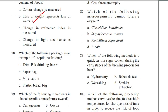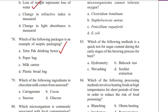Question 78. Which of the following packages is an example of active packaging? A. Tetra pack drinking boxes, B. Paper bag, C. Milk carton, D. Plastic bread bag. Answer is A. Tetra pack drinking boxes.